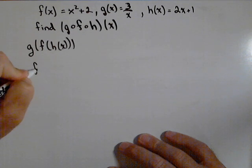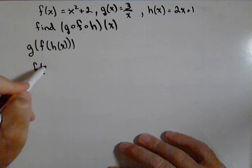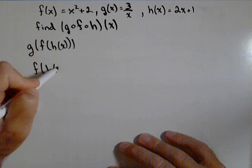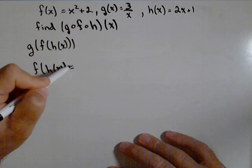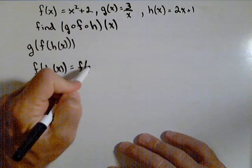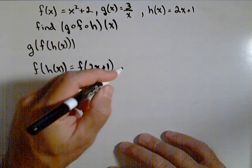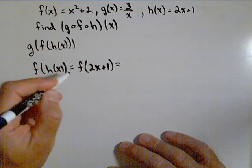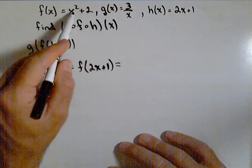Now we know that f of h of x is 2x plus 1. So that means in f, any place there's an x, we're putting 2x plus 1.